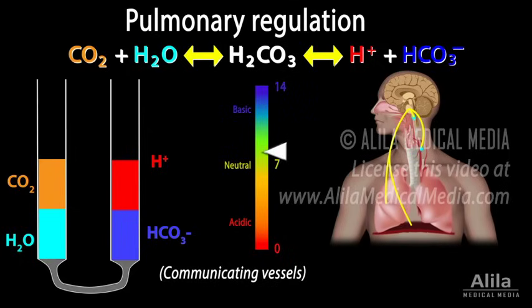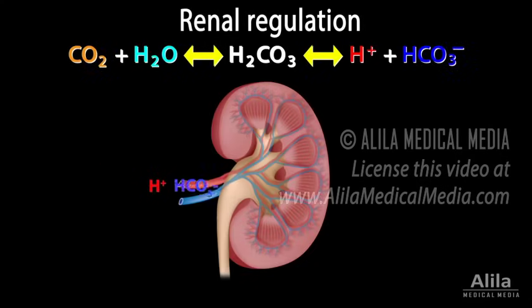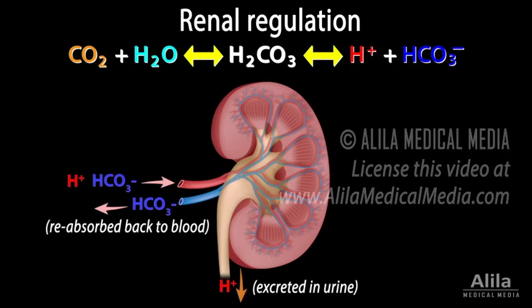Pulmonary regulation is fast, usually effective within minutes to hours. The second mechanism is excretion of hydrogen ions and reabsorption of bicarbonate through the kidneys. The kidneys control blood pH by adjusting the amount of excreted acids and reabsorbed bicarbonate. Renal regulation is slower — it usually takes days to respond to pH disturbances.